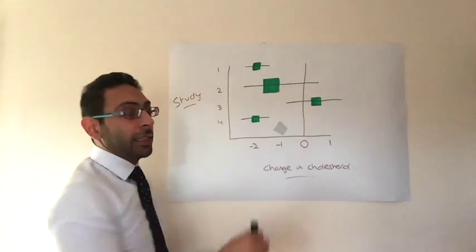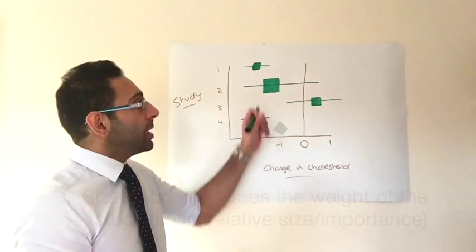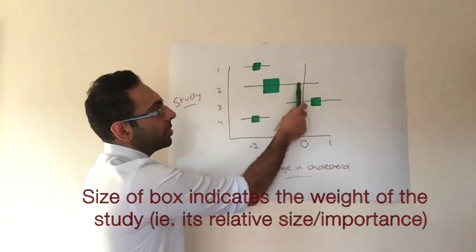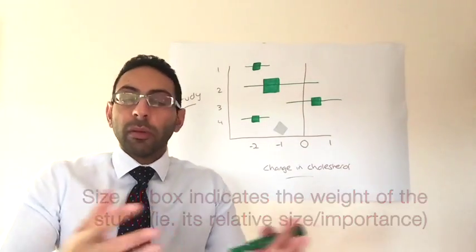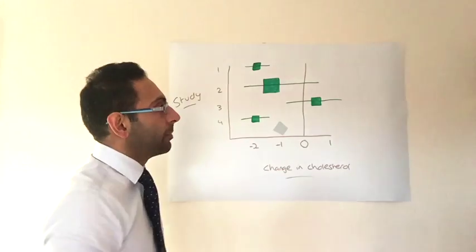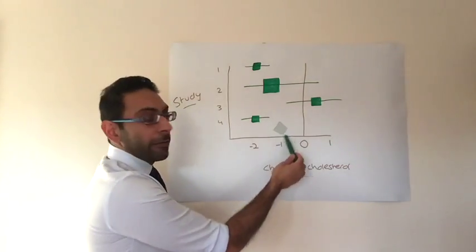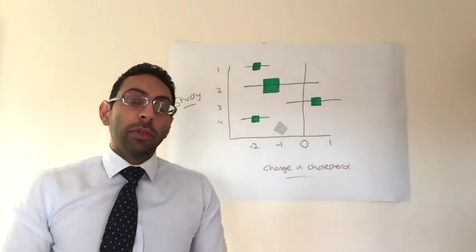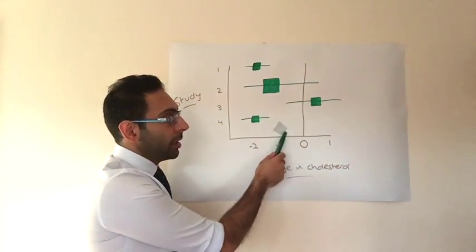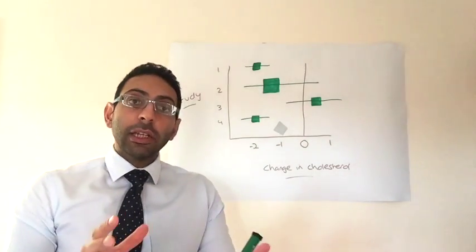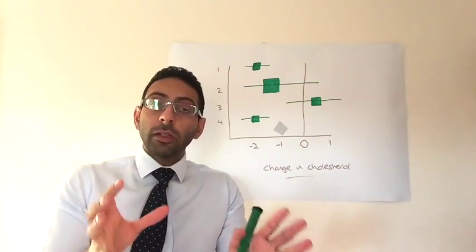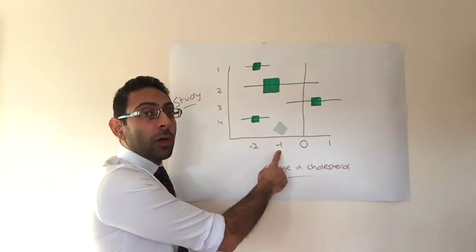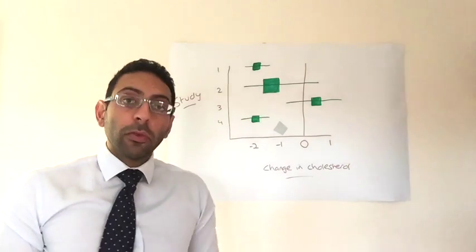So the first thing to look at is the individual studies and the size of the boxes. So the size of the boxes represents the size of the study. So in this example, you can see that study two was by far the biggest study in terms of results or number of participants or however you measure it. The one additional thing you get in a forest plot that you don't, for example, get in a box plot is an average or outcome of all of those studies put together. So that's where the diamond comes in. So then when you look at the diamond, that's telling you what the overall mean result was for all of the studies. So in this case, you can see there's a mean drop in cholesterol of minus one across all those four studies.